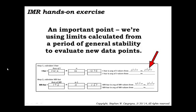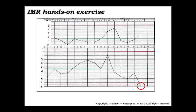And just a quick reminder, what we're doing here is we're using these limits calculated from a period that we have judged to be generally stable to now evaluate new data points going forward. So I always emphasize this to folks. And when they plot the new data points, lo and behold, there is a signal. One of the points drops below the lower limit for the individual values. So now we've got something.